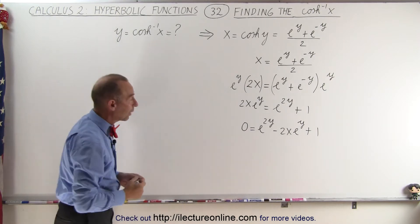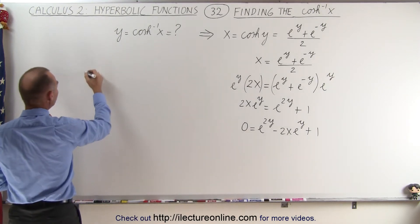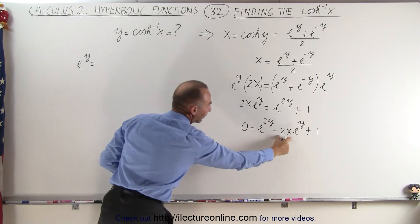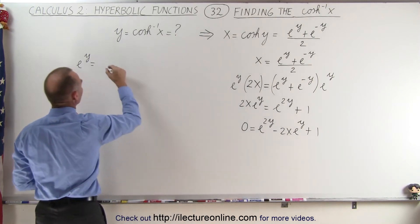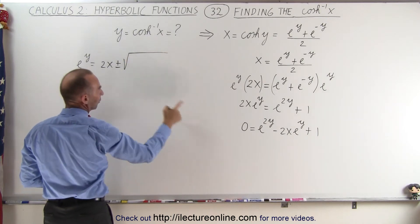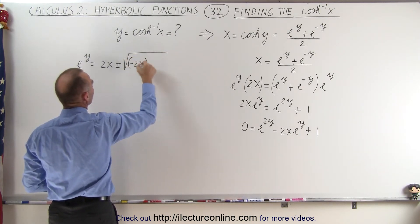And so now we're going to use the quadratic formula to solve that. So we can say here that e to the y is equal to the negative coefficient of the middle term that becomes a positive 2x plus and minus the square root of the middle term squared, which is negative 2x quantity squared,